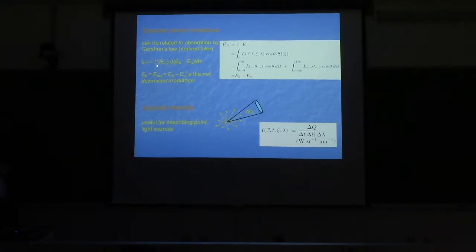If you have an ecosystem model and want to figure out how much light is absorbed to grow your phytoplankton, you need to know the depth dependence of this net irradiance ED minus EU.